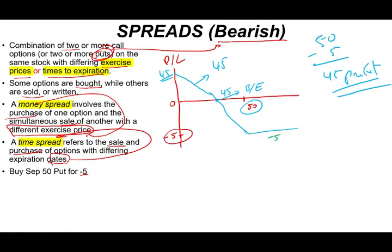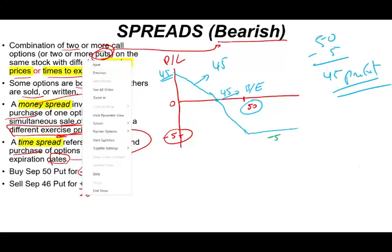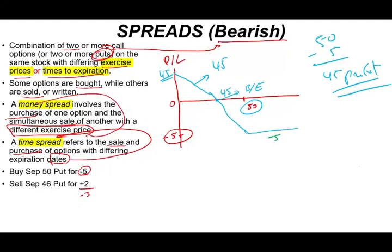Now let's sell a September 46 put and receive two dollars. So simply put we paid five to buy the put, we got two dollars to sell the put. Now we are at negative three in total. This is our new cost. Okay now basically what's going to happen is this.